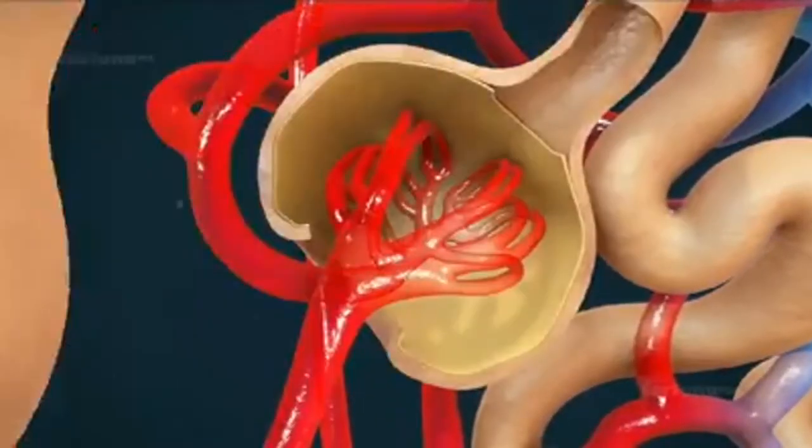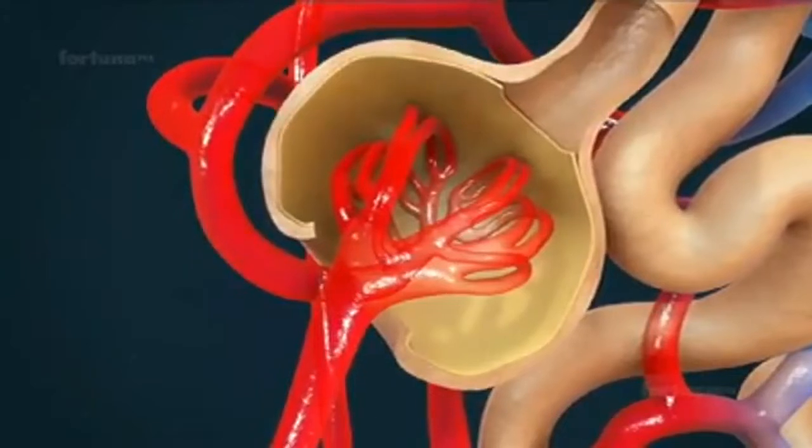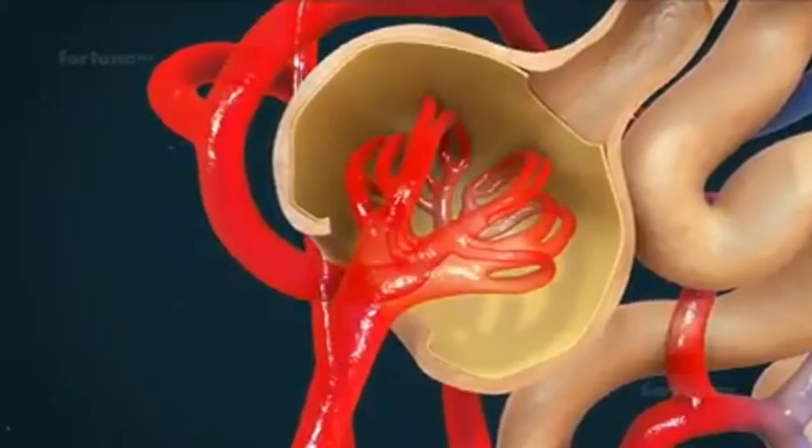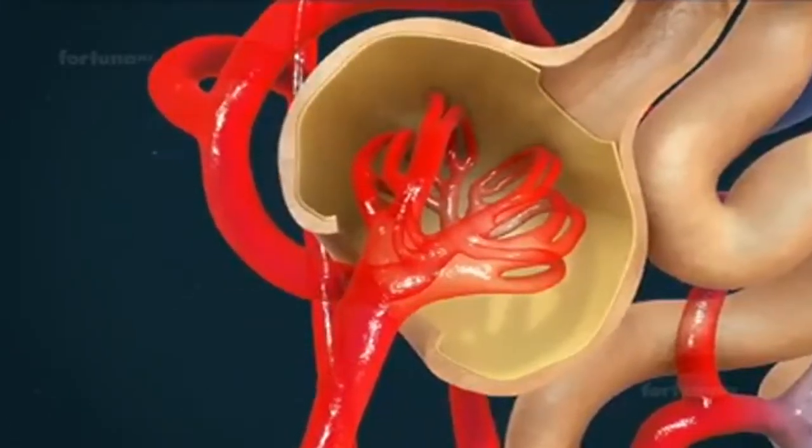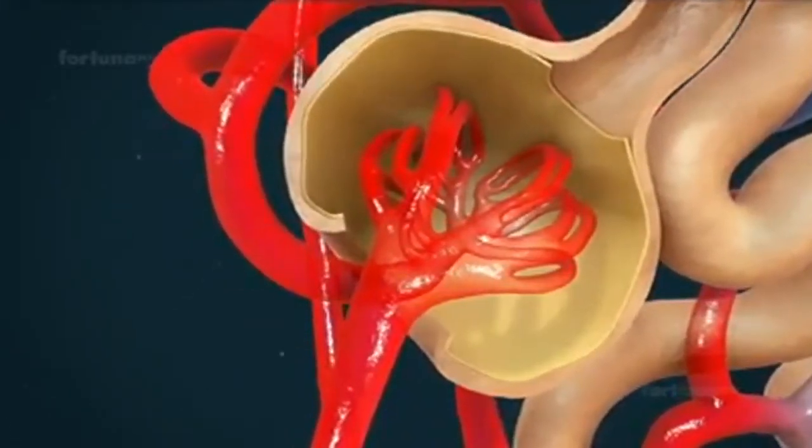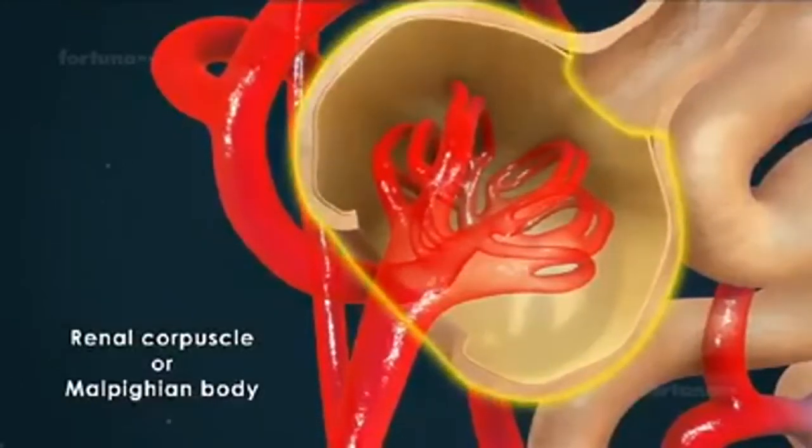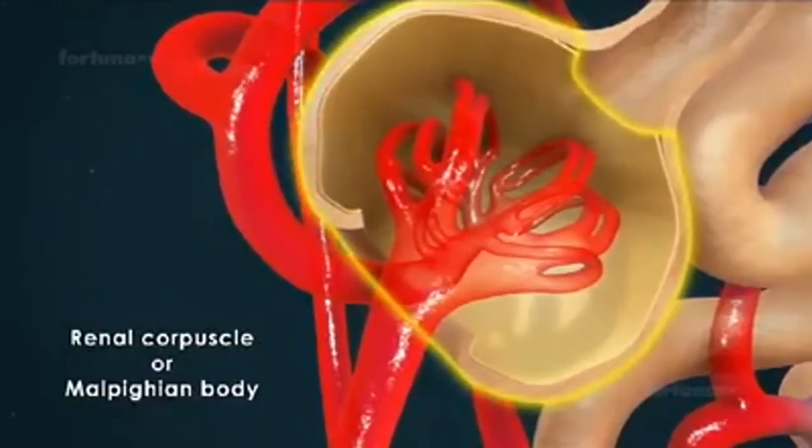Inside the Bowman's capsule is a cluster of microscopic capillaries known as the glomerulus. Together, the Bowman's capsule and the glomerulus are known as the renal corpuscle or sometimes, a Malpighian body.